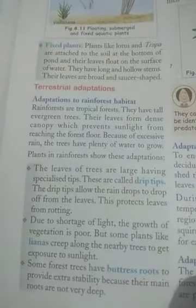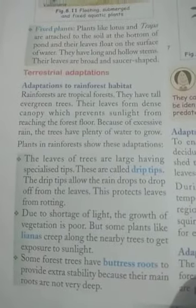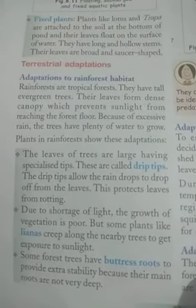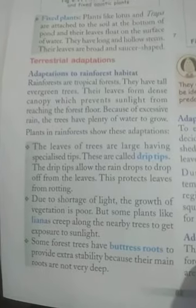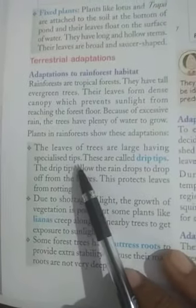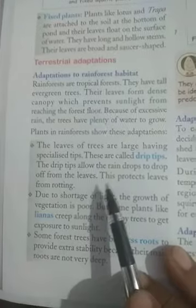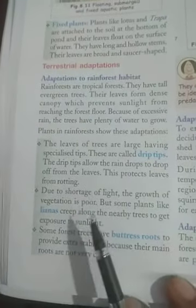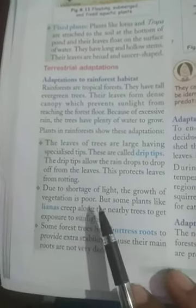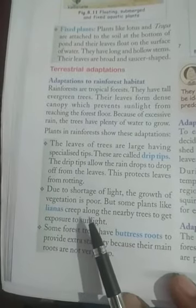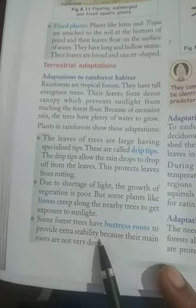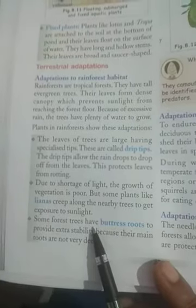Here we study Adaptation to Rainforest Habitat. Rainforests are tropical forests that have tall evergreen trees. Plants in the rainforest show the following types of adaptations: The leaves of trees are large, having special tips called drip tips. Drip tips allow raindrops to drop off from the leaves and also protect the leaves from rotting. Due to shortage of light, the growth of vegetation is poor, but some plants like lianas creep along nearby trees to get exposure to sunlight. Some forest trees have buttress roots to provide extra stability because their main roots are not very deep.